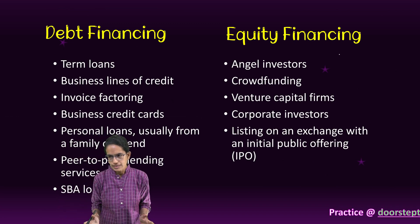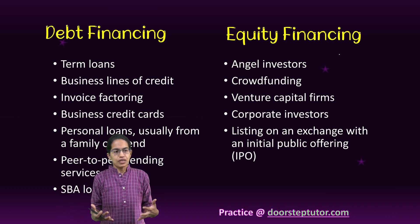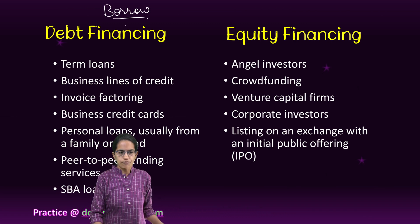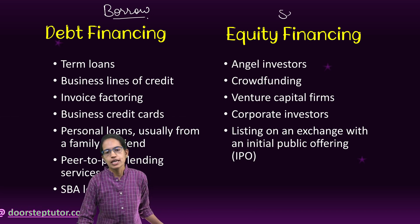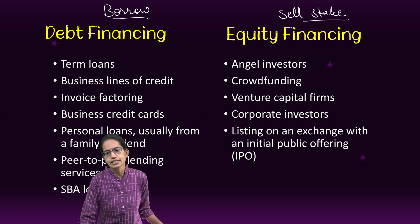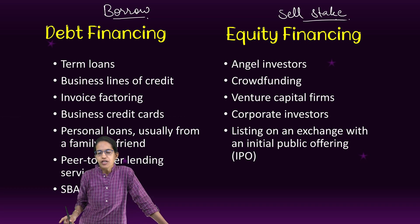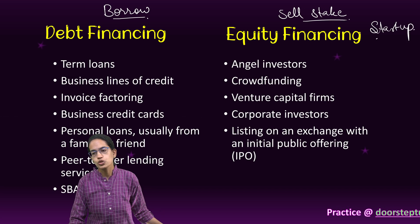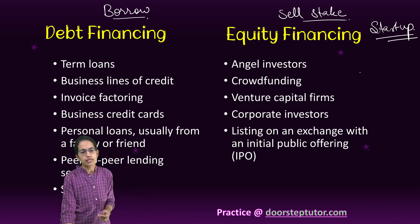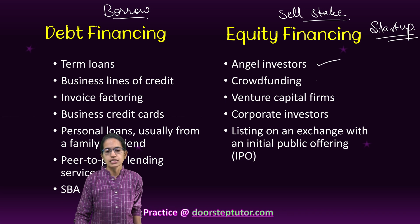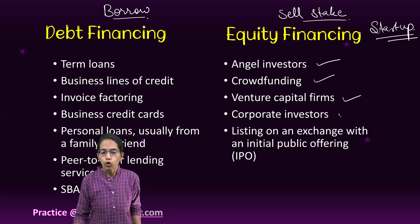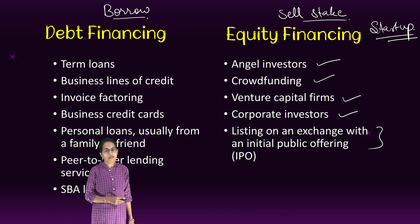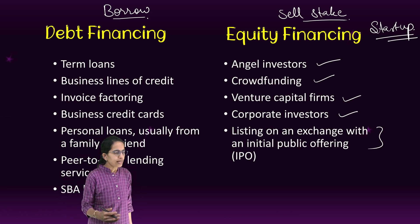Coming on to some common examples. To raise capital, either I borrow as in debt financing, or I sell a part of my stake in the company as in equity financing. Equity financing is usually done for startups who do not have a strong base or credit worthiness. Angel investors, crowdfunding, venture capitalists, corporate investors, or listing via IPO are common examples of raising money through equity financing.